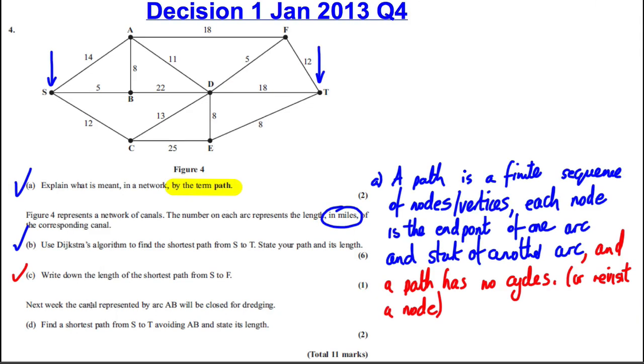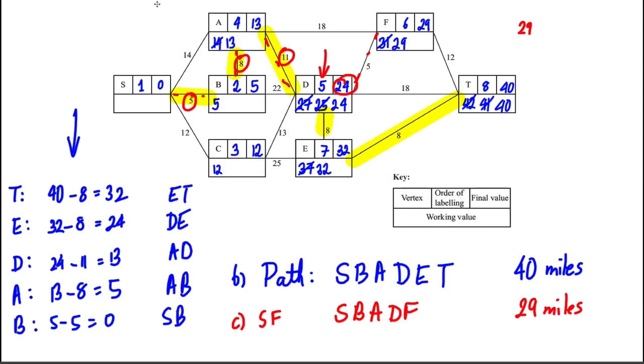Part D: the canal represented by arc AB will be closed for dredging. Find the shortest path from S to T avoiding AB.